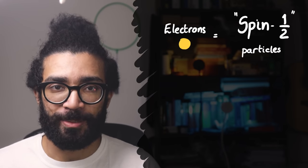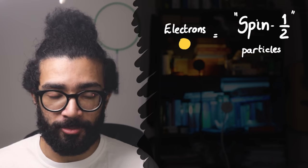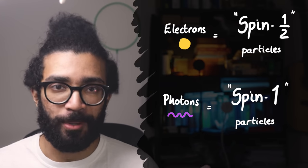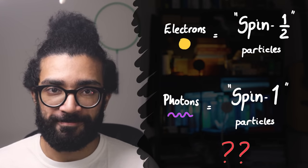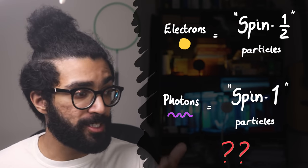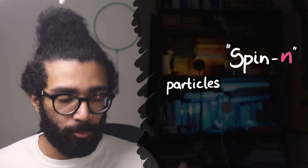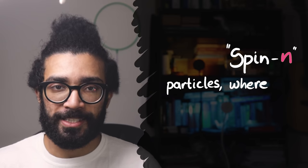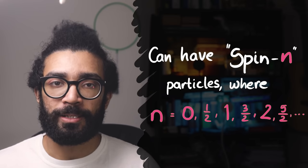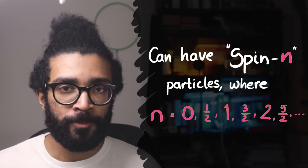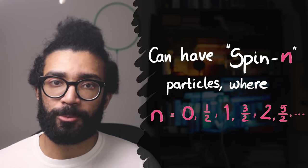Some of you might have heard of electrons being called spin half particles, and photons being called spin one particles. What does this mean? Whenever you hear that a particle is a spin n particle, whatever n might be, the first important thing to note is that n will always either be an integer, a whole number, or a half integer.